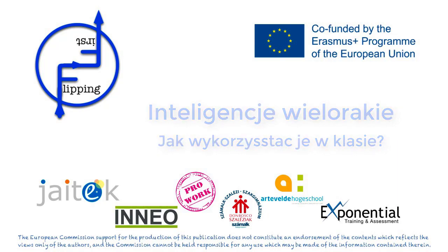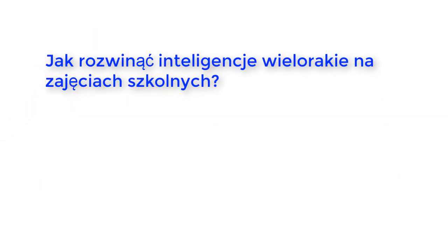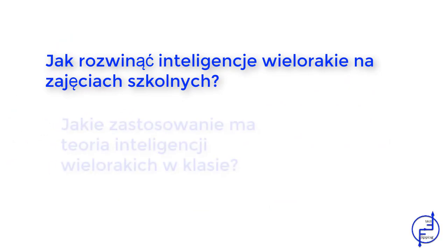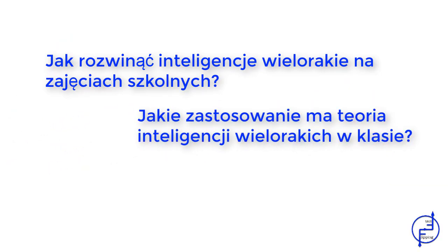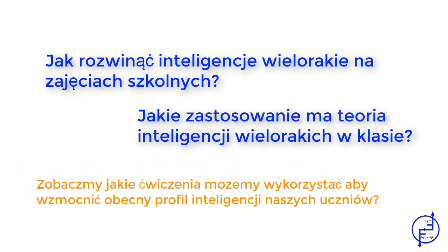How can we develop intelligence in high school? The theory of multiple intelligences was established by Howard Gardner, explaining seven types of intelligence, which distinguishes all people by providing a unique combination that no two people share. One of the main contributions of this theory is that all people are intelligent in their own way.